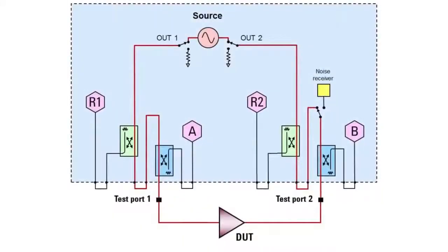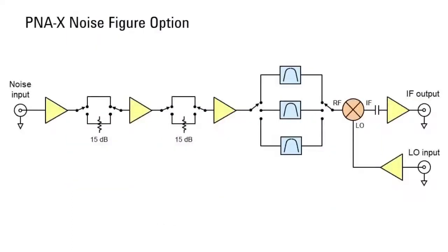The second measurement is the noise power coming from the output of the DUT, with a room temperature load at the input. The PNA-X noise figure option includes a built-in low noise receiver with three different gain settings. This means that a broad range of devices with any combination of gain and noise figure can be tested without any additional hardware.